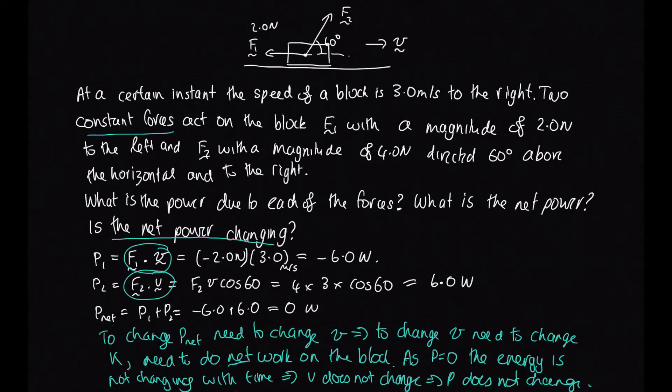So another way that we could think about this: we've considered the energy here, but we could also look at what's the net force acting on the block. So we've got 2 newtons from F1 going this way. If we consider the net force from F2 parallel to the direction of motion, then this is 4 cos 60, which is equal to 2. And so because we've got balanced forces, the net force is equal to zero. And if there is no net force, we know that the speed is not changing.